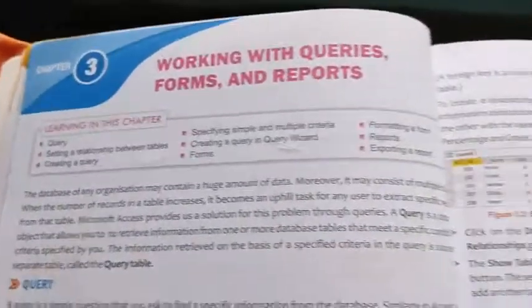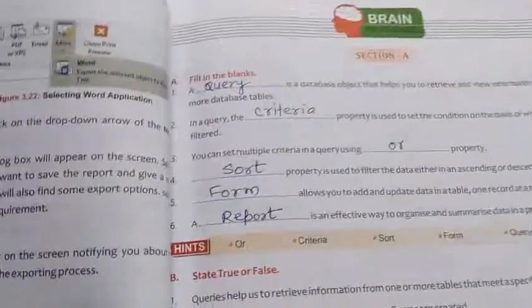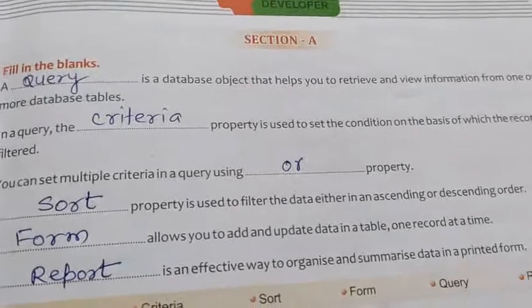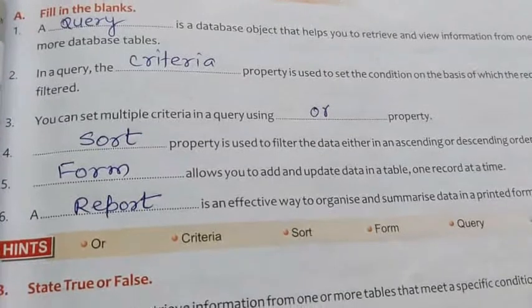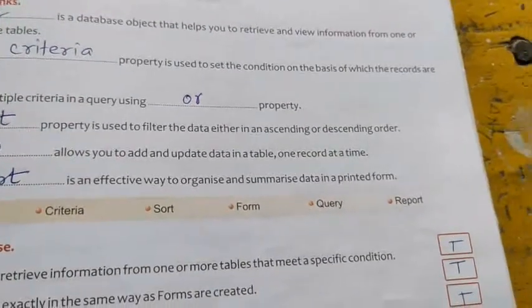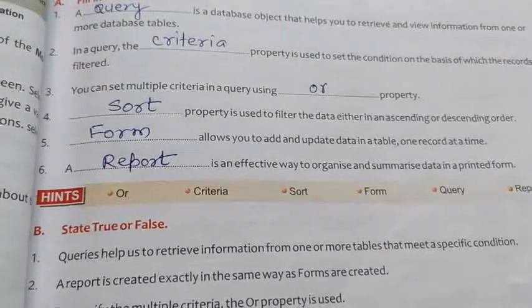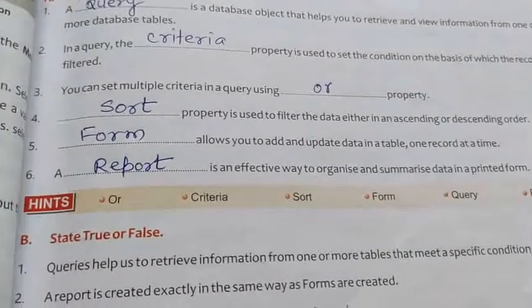Chapter 3: Working with Queries. Press Shift + F2 to zoom in on the current field. A query is a database object that helps you retrieve and view information from one or more database tables. In a query, the criteria property is used to set the condition on the basis of which records are filtered. You can set multiple criteria in a query using the OR property.